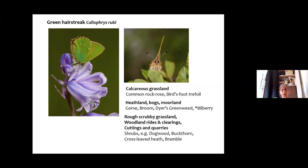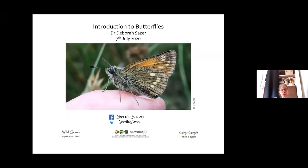The green hairstreak is much more widespread and feeds on lots of different food plants on lots of different habitat types — but it's very well camouflaged because it's green, the only green butterfly, and it flies quite early in the year so I think it's quite under-recorded. In Wales it often feeds on bilberry on heathlands and its wings are exactly the same colour as the bilberry leaves. Its upper side is actually brown — it's only the underwings that are green — so it has a very brown look when it flies.